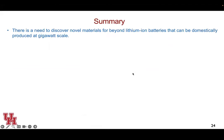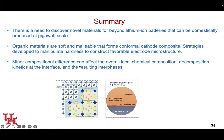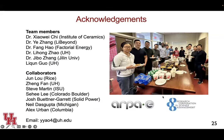In conclusion, there is a strong need to discover new materials beyond business-as-usual batteries that can be domestically produced at gigawatt or terawatt scale. Organic materials are soft and malleable, forming a conformal cathode interface. We developed strategies to manipulate hardness and construct the right microstructure. Minor composition differences can significantly affect the overall properties of the solid electrolyte and the interface. I'd like to thank my team members, collaborators, and funding agencies. I'll stop here and answer questions in the panel discussion.